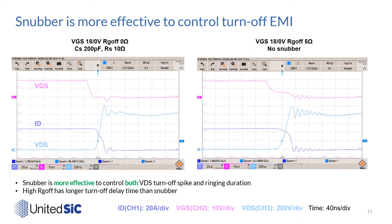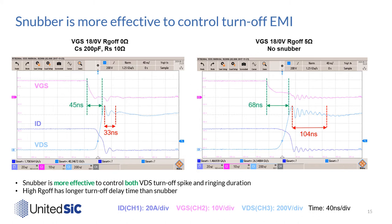Let's have a quick summary comparing snubber and high RG waveforms side by side. Comparing turn-off: the left waveform uses snubber with 0 ohm RG off; the right uses higher RG off but no snubber. Both measures limit the turn-off VDS peak spike voltage. However, snubber damps the ringing in 33 nanoseconds while high RG off still has over 100 nanoseconds of ringing duration. Also, snubber has less delay time than high RG off. Therefore, snubber is more effective to control both VDS spike and ringing duration at turn-off.